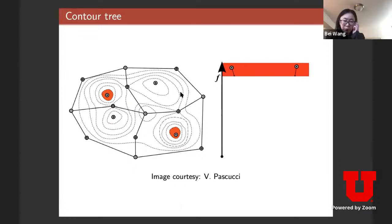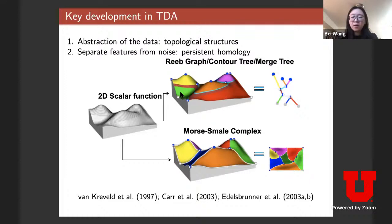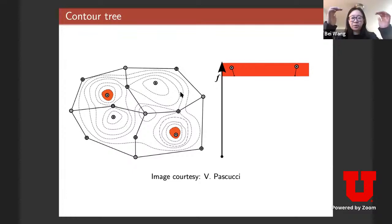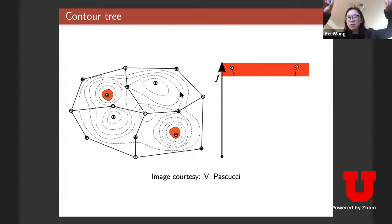Let's look at the contour tree first. Imagine a 2D scalar function defined on a domain, where dotted lines are all points of the same height value. Starting from the top — two local maxima, two mountain tops — I have two components in the tree. As I slowly decrease the height value, the contours grow. At the next level, I encounter a third mountain top, which is another local maximum, giving birth to a third component.